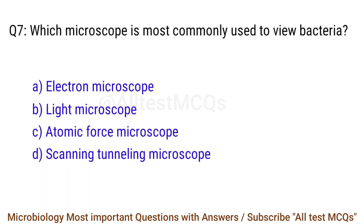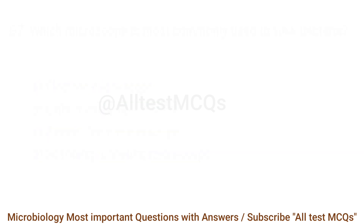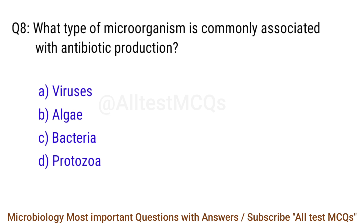Q7. Which microscope is most commonly used to view bacteria? The right answer is option B: Light microscope. Q8. What type of microorganism is commonly associated with antibiotic production? The right answer is option C: Bacteria.